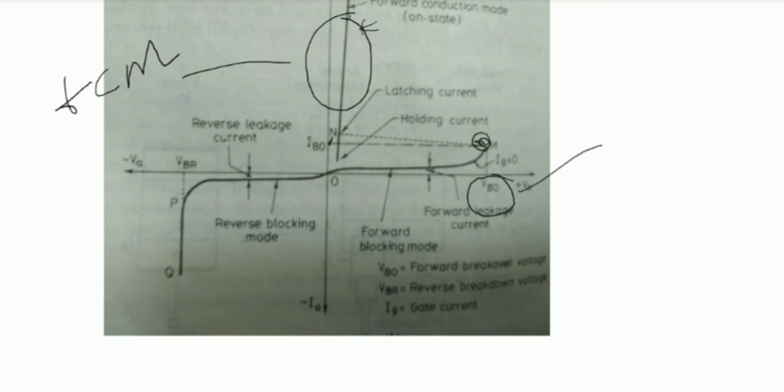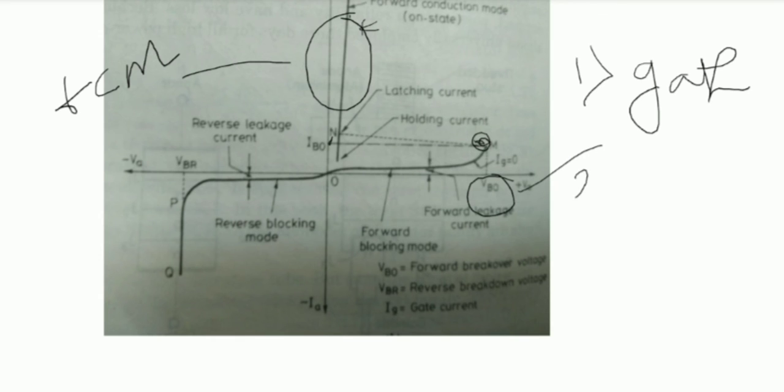A thyristor can be brought from forward blocking mode to forward conduction mode by: (1) applying a positive gate pulse between the gate and cathode, or (2) applying the forward breakover voltage VBO. These are the two ways to switch the thyristor into forward conduction mode.